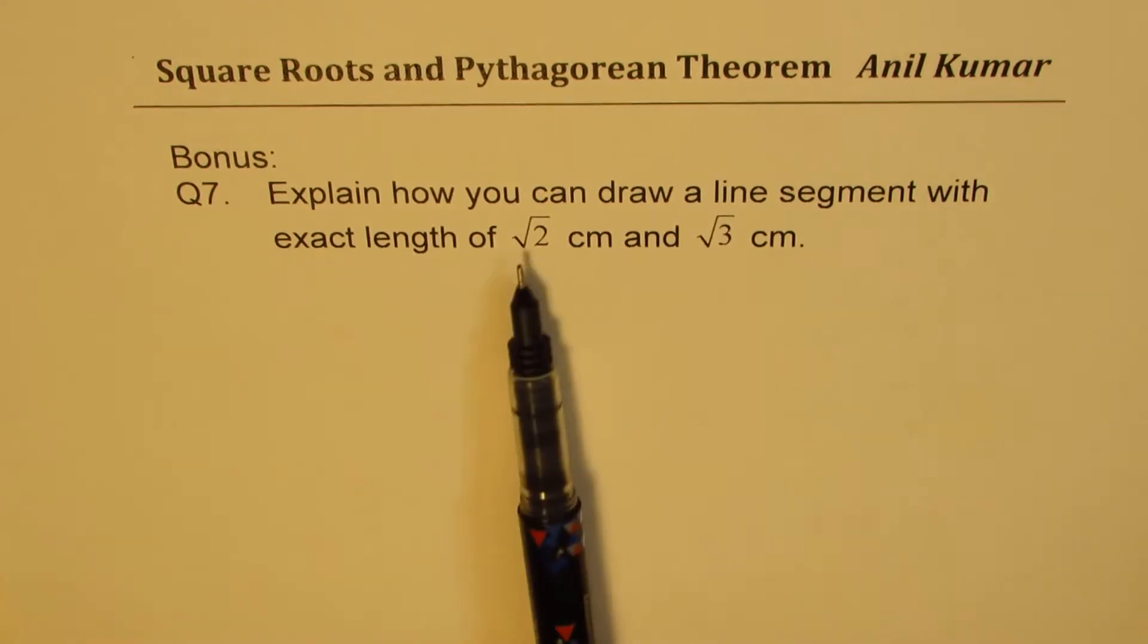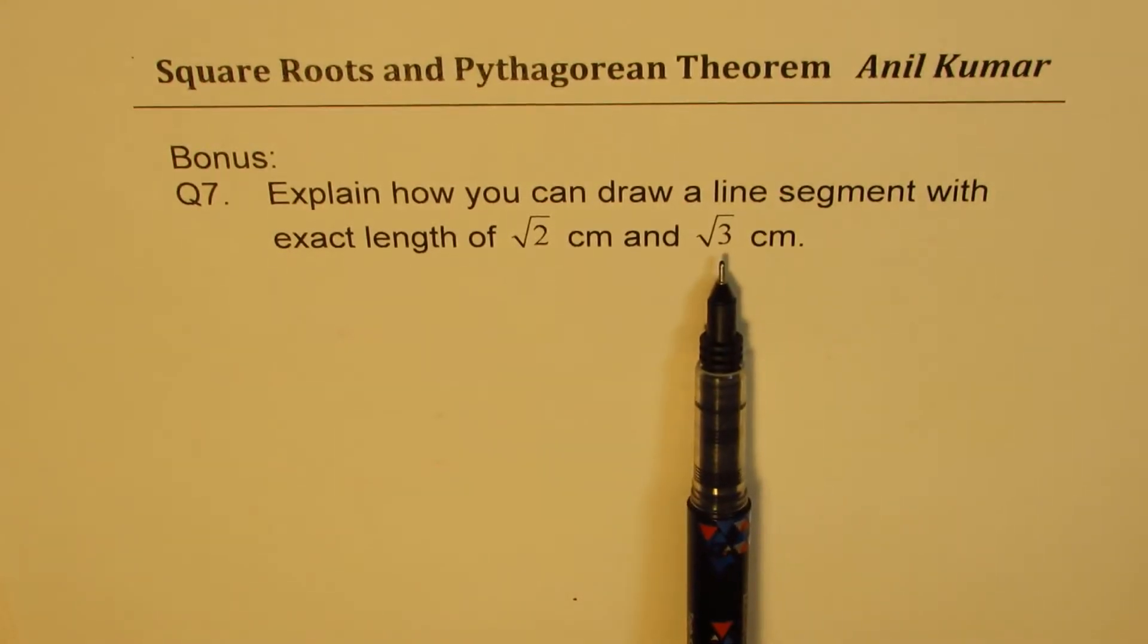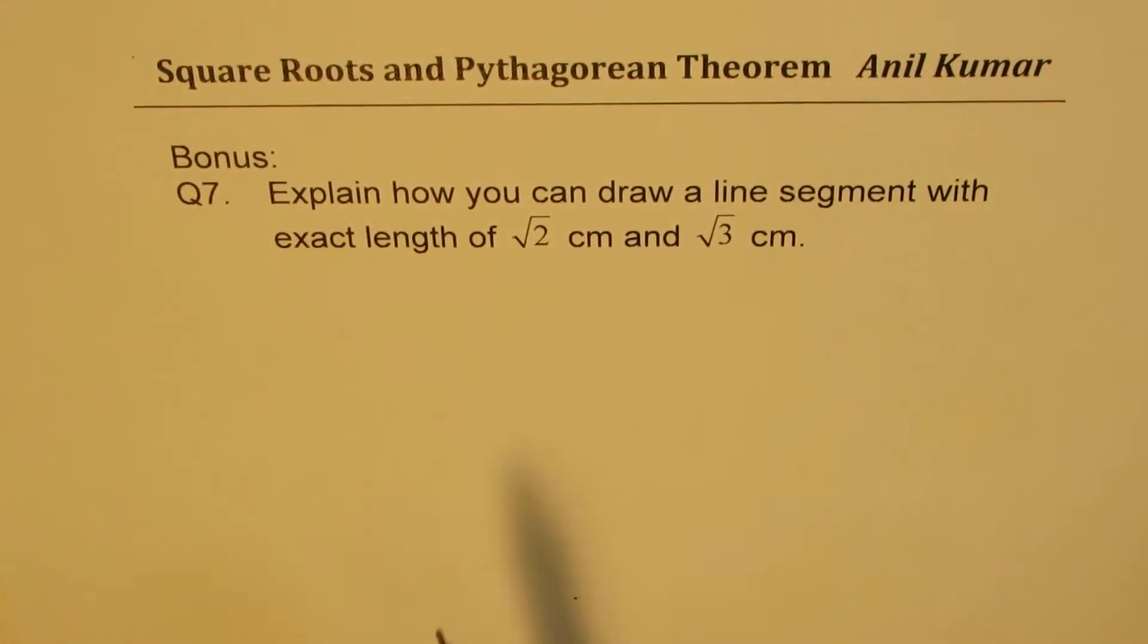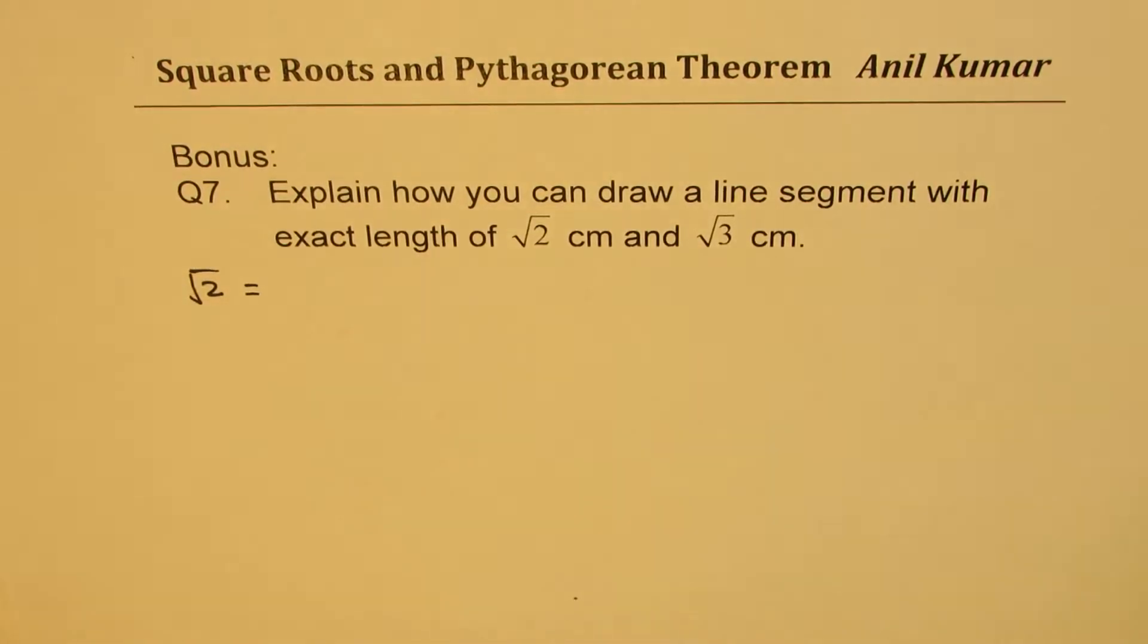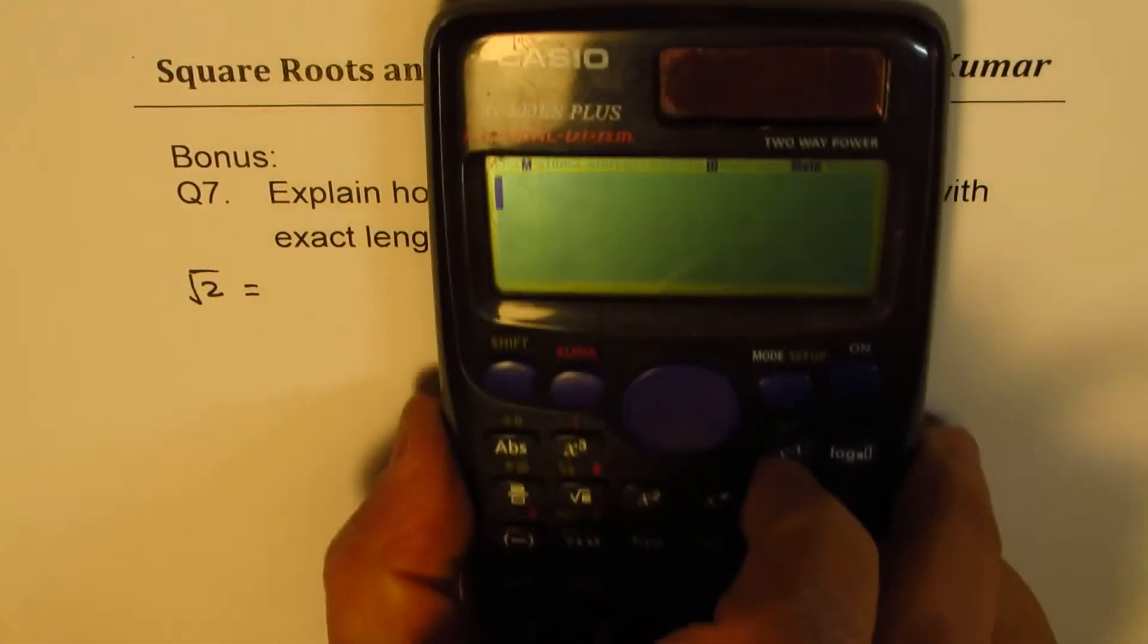As you know, square root 2 and square root 3 are irrational numbers. We do not have exact value of these numbers. So if I write square root of 2 and use calculator, what do I get? Let's see.